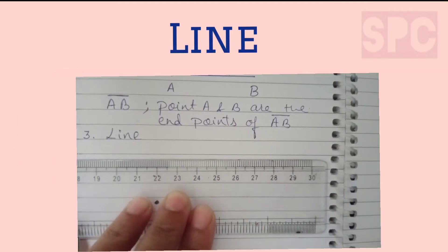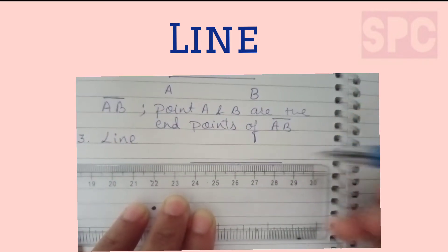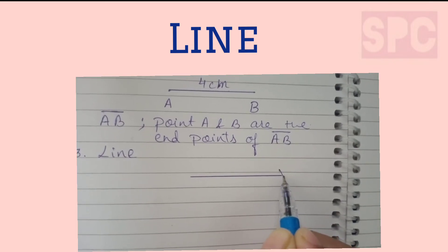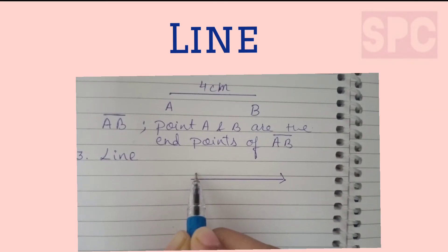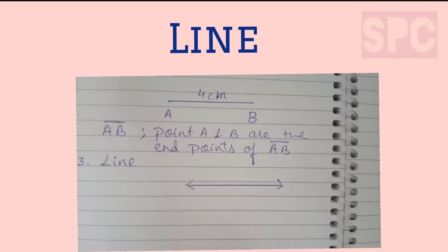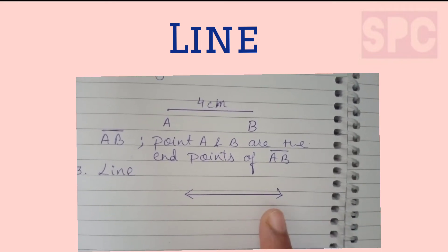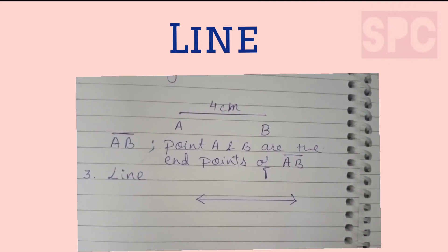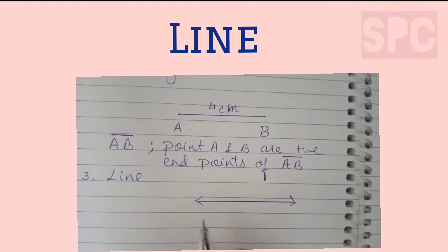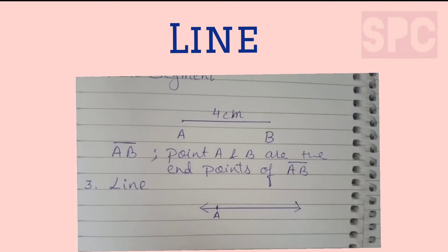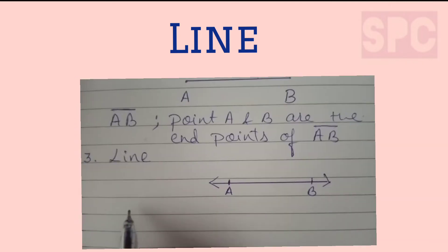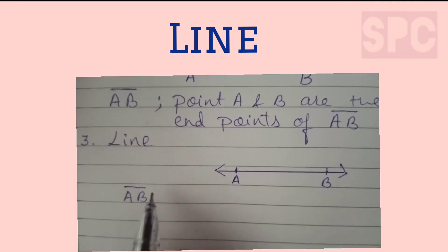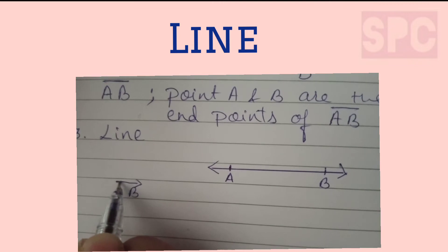A line is an endless straight path that extends in both directions. A line has no end point — unlike a line segment which has two end points, a line keeps stretching in both directions. Here we have drawn a line with two points A and B on it, so it is written as line AB.